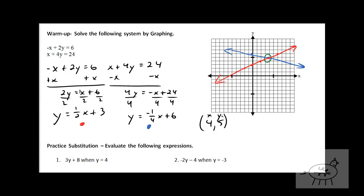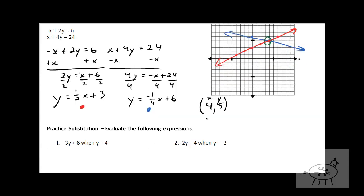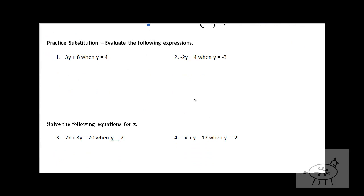So here's the deal. The only issue I have with the graphing method is that let's say you're not so careful with the points and you kind of sketch the lines and the lines aren't exact. Well, it's pretty hard — if they're not exact — to see where they intersect, because if you're off by a little bit, you're off by one or two, and that completely changes the answer. So we have two other methods we're going to learn to solve systems of equations. The first method, which we're going to talk about today, is called substitution.